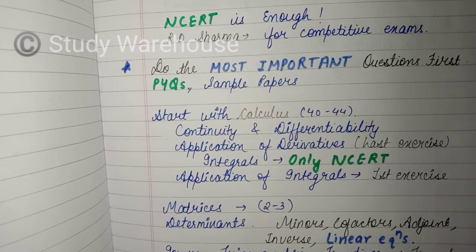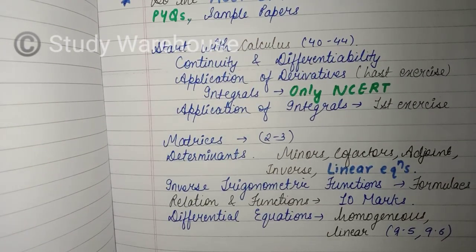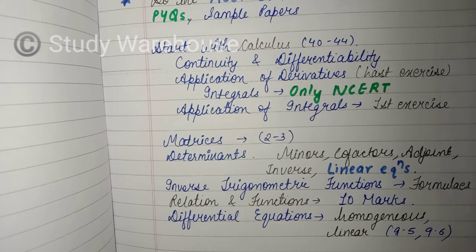After that we have determinants. In determinants, the most important topic is solving linear equations. Minors, cofactors, adjoint - these are basic simple topics that would be asked only for one or two marks. But the inverse and linear equations are very important, they generally come for four to five marks in board exams.